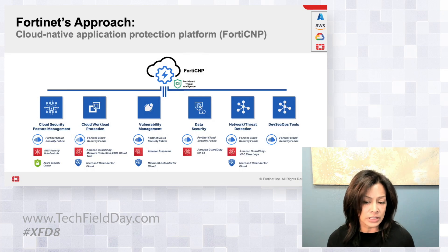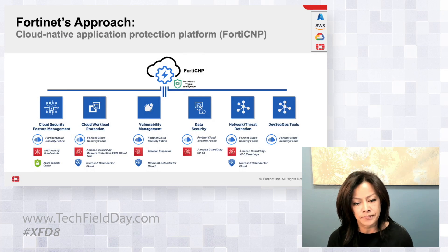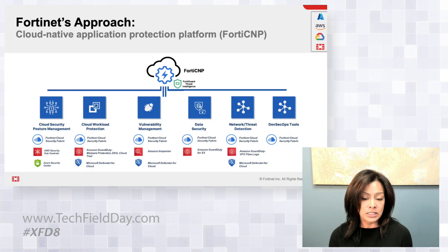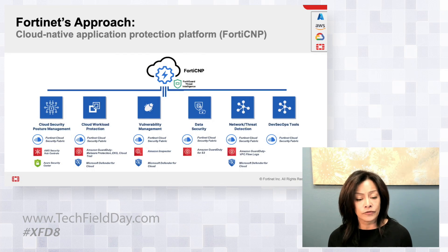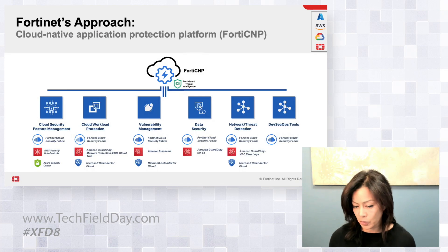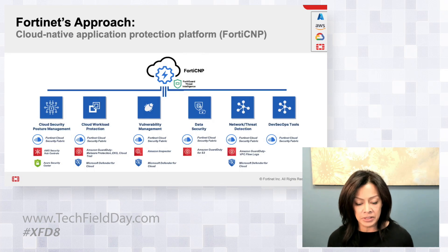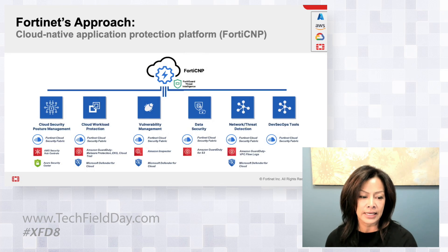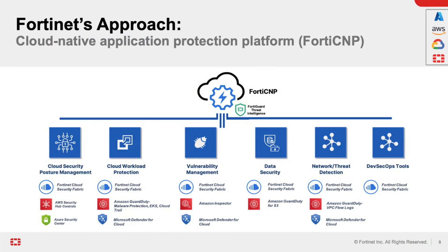Knowing that these services are deeply integrated into cloud environments, we're able to see in real time the various security events happening within their ecosystems. The challenge is: with these services generating large amounts of data, how do we help rationalize that data? That's what FortiCNP aims to do — rationalize all those alerts and make it easier for security teams to understand where the most critical risks are and what to do to remediate them. We will continue to integrate additional CSP security services on the roadmap to provide broader visibility and coverage.